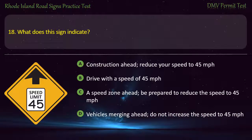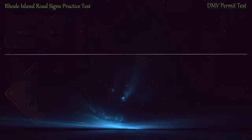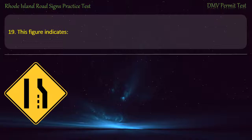Question 18. Do not increase the speed to 45 miles per hour. Answer: A speed zone ahead — be prepared to reduce the speed to 45 miles per hour.